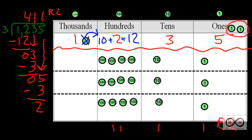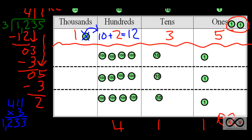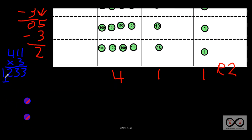Let's check it out. We'll take 411 times 3. 3 times 1 is 3. 3 times 1 ten would be 3 — really 30. Then 3 times 4 is 12. And we're at 1,233. You say, well, that's not quite right — that's because we haven't added on our remainder yet. So we put our remainder back in: plus 2. 2 plus 3 is 5, then 3 tens, 2 hundreds, and 1,000 — 1,235. That absolutely checks out.